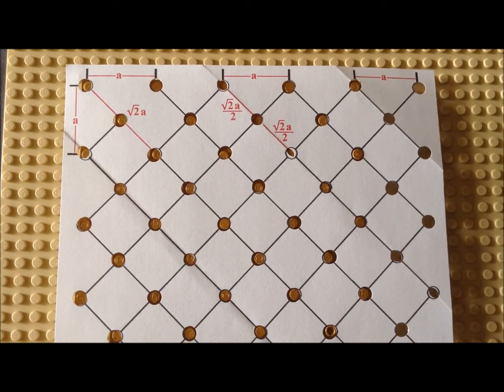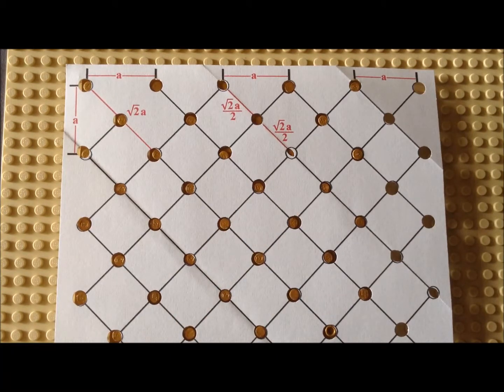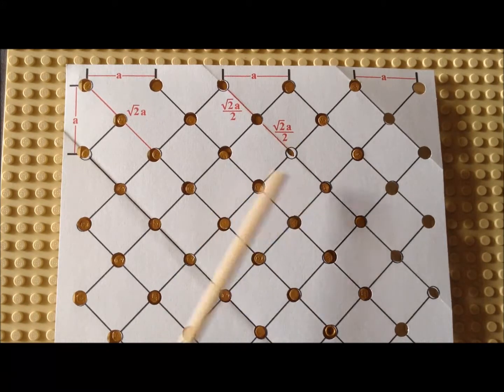We now overlay pattern 8 over exactly the same lattice we had before, exactly the same arrangement of the FCC 100 atoms.